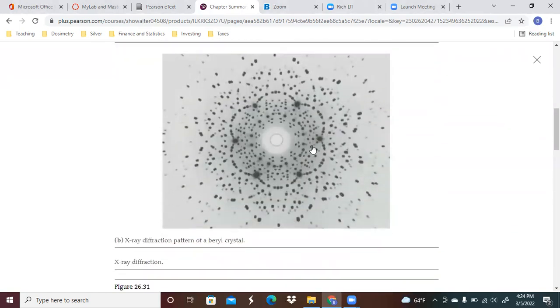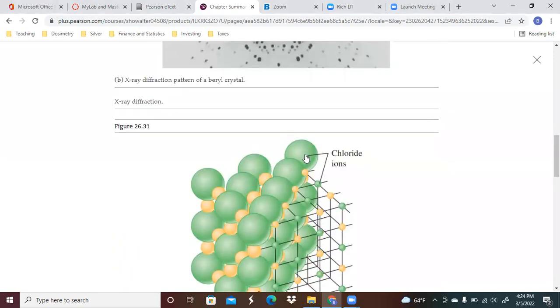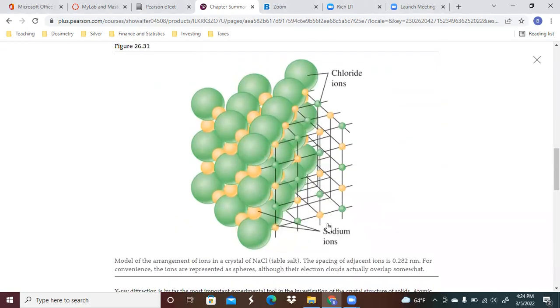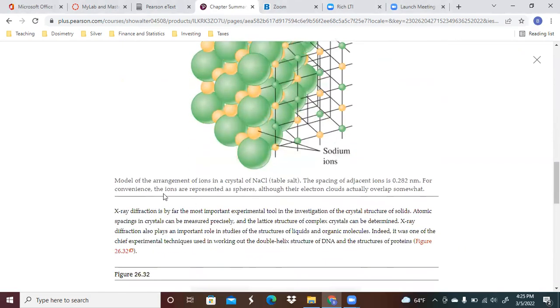And so this is the kind of diffraction pattern that you would see out of different types of crystals. So you got sodium ions here, you've got chlorine chloride ions here, and this spacing of adjacent ions is about 0.282 nanometers.